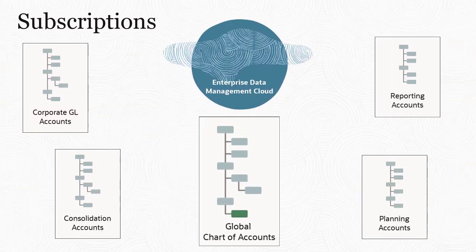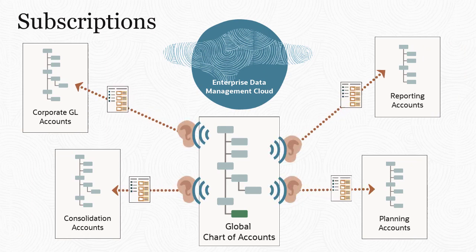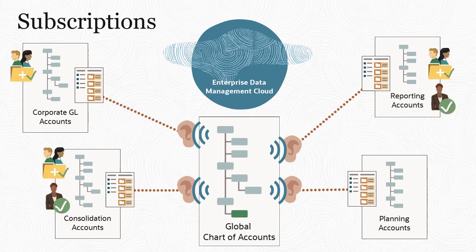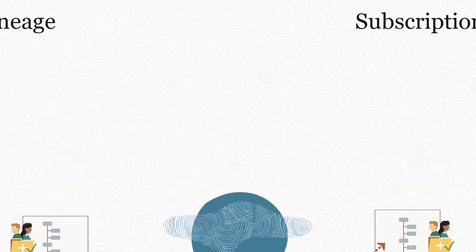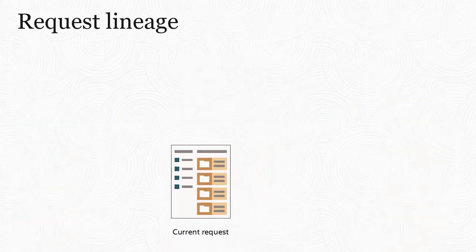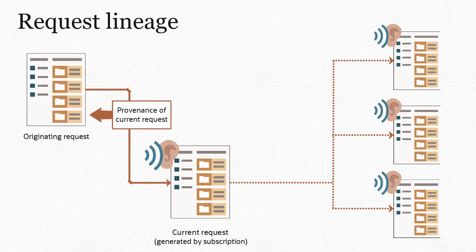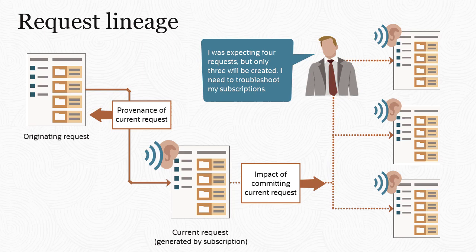When changes are committed, subscriptions generate new requests to synchronize the changes to any consuming applications. These subscription requests can trigger their own data governance policies and workflows before changes are committed. Use request lineage to trace the provenance of your change to its original source, or assess the impact of your change request on downstream business perspectives to monitor and troubleshoot whether change expectations match reality.